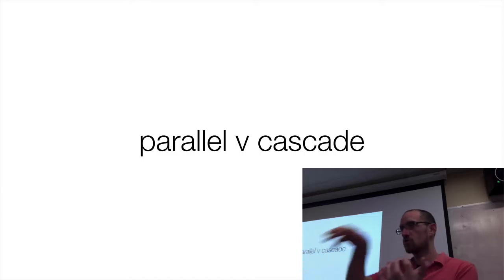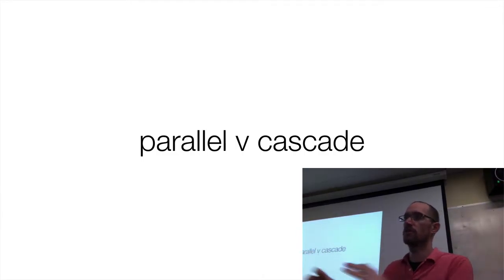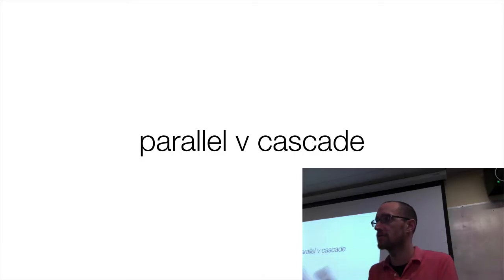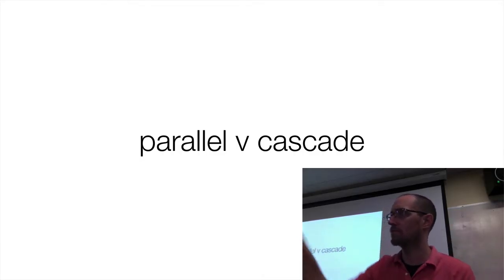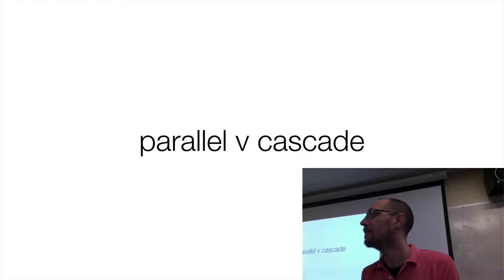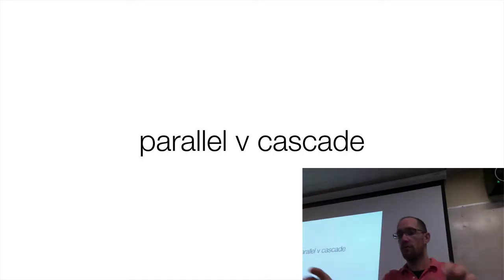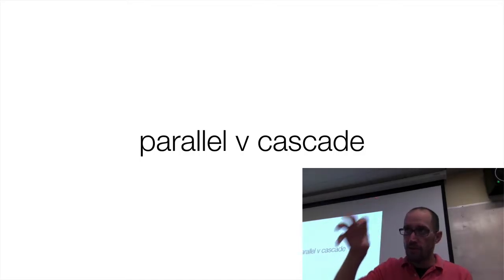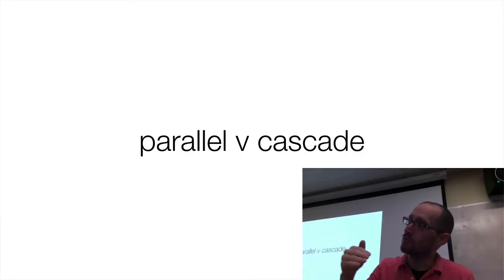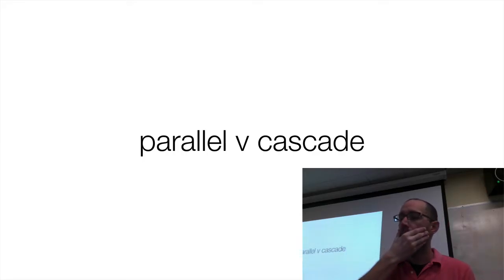When you cascade filters one after another — where filter one feeds into filter two feeds into filter three — you're cascading the effect of those things. Why do we have to pay attention to whether things are in parallel or cascading? Solomon: in cascading, the first filter is affected by all the filters after it. In parallel, each outputs separately and won't be affected by the other filter. Their outputs are mixed together and sent to your overall output.